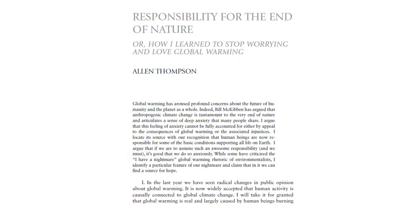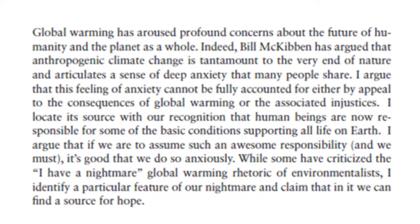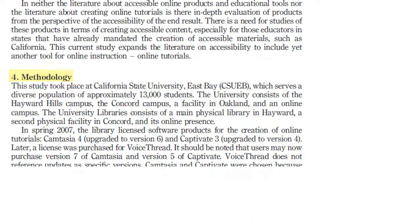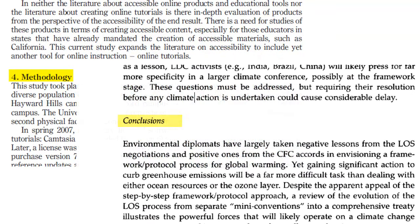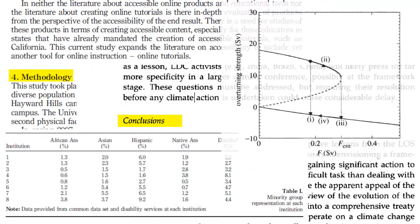Another item found on the first page of scholarly articles is the abstract, which provides a relatively brief description of what questions the research is trying to answer and what the results were. Some scholarly articles, depending on the field, will have headings such as literature review, methods, results, and conclusions. There will often be tables or graphs presenting research results as well.